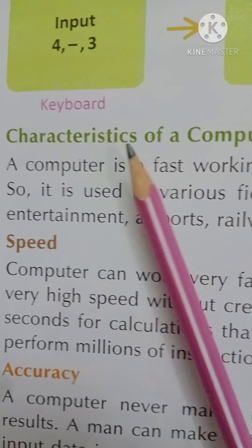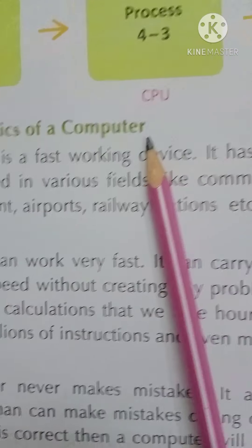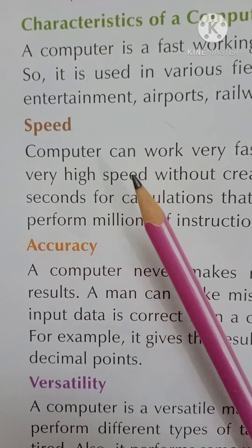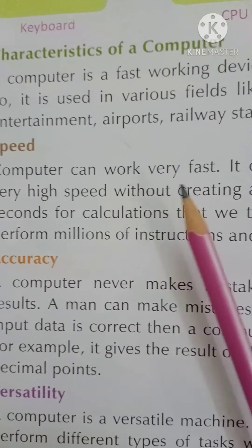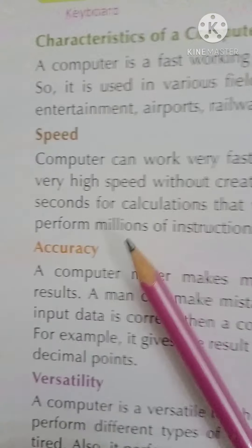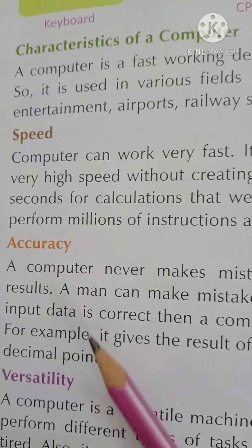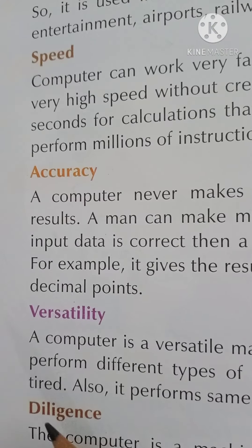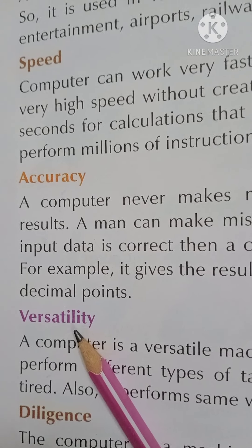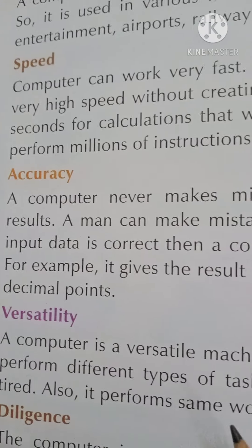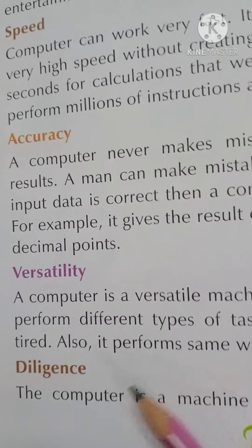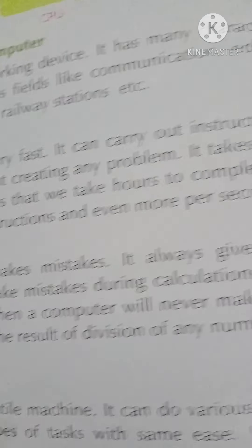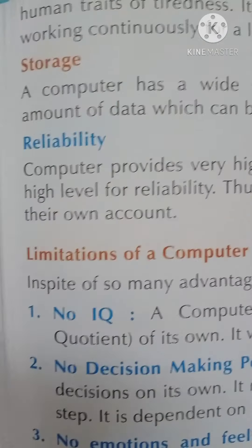Next are the characteristics of a computer. First is speed — the computer works very rapidly. Next is accuracy — its results will be accurate. Next is versatile — it can perform many types of work.